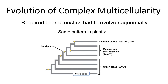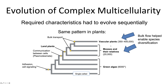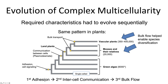Looking at the same pattern in plants: land plants include vascular plants, mosses, and green algae. Adhesion and cell signaling evolved in all of these groups. Then communication evolved next in mosses, some green algae, and vascular plants. Then bulk transport evolved twice — in vascular plants and some moss relatives. Once again, bulk flow enabled diversification of many different species, and you have this sequential order: before you can have bulk flow, you must have intercell communication, and before that you must have adhesion. Each step must come before the next to reach complex multicellularity.